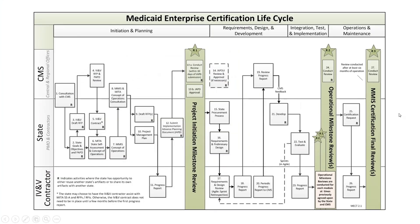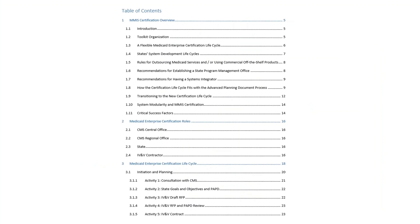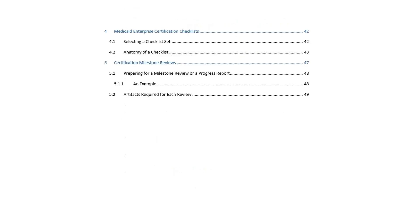Let's take a look at the MECL. This document covers topics such as the use of COTS products, the importance of a systems integrator and a state program management function, and an explanation of how the lifecycle and the APD process fit together. Importantly, this document addresses how a state can transition to the new certification process. This material is found in Section 1.9. The other sections include roles, details about the activities we just saw in the workflow diagram, coverage of the checklists, and finally, how to prepare for a milestone review.